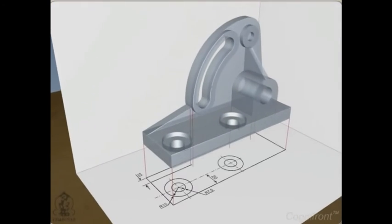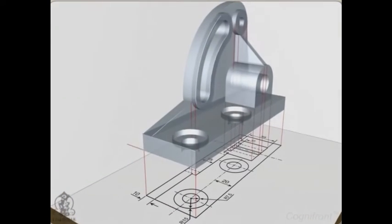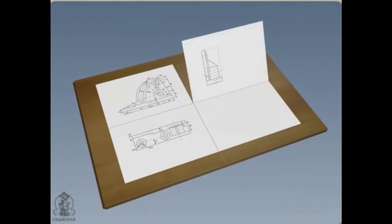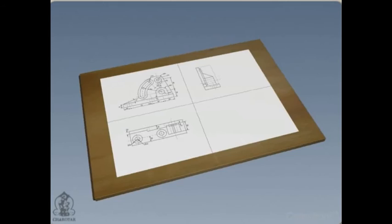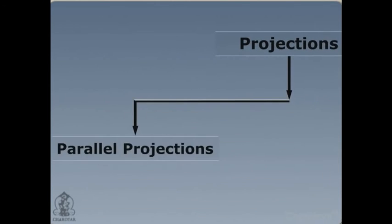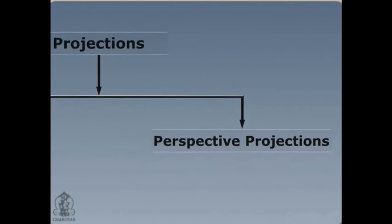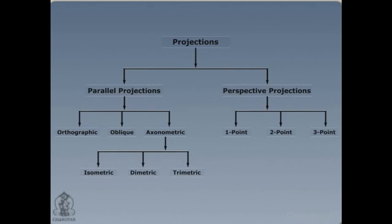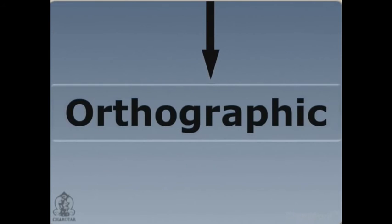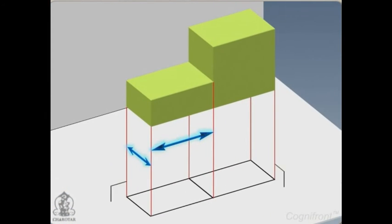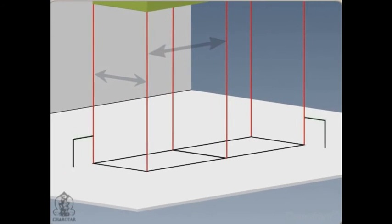The word projection means to throw forward. It is a process of plotting an object or entity on imaginary planes. Projection has two types: parallel projection and perspective projection. Each of these, in turn, has further subtypes. We will focus on orthographic projections where the projectors are parallel to each other and they intersect the projection plane at right angles.